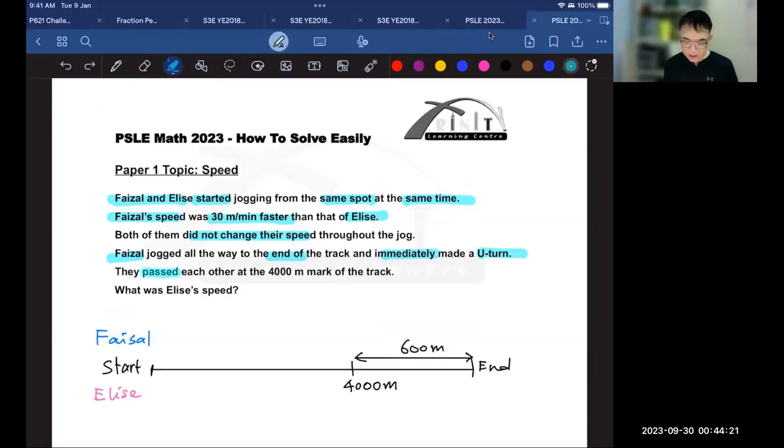And what happens to Elise? Well, they will pass each other at the 4,000 meter mark on the track. So for Faisal, he takes the same amount of time to do this as it takes for Elise to do this. So these are the distances traveled by Faisal and Elise.